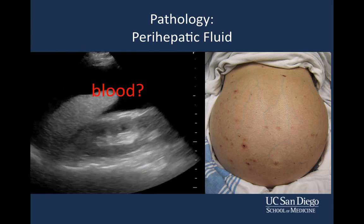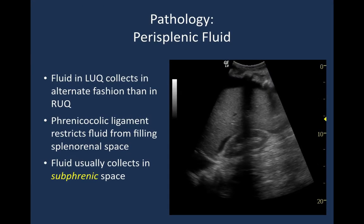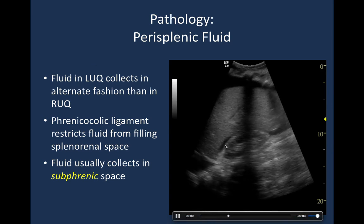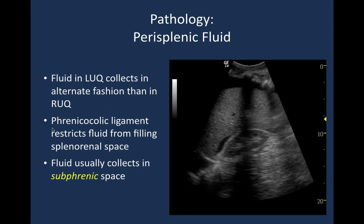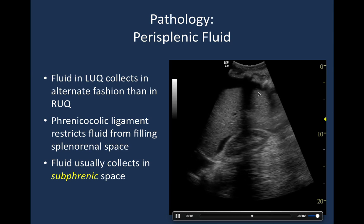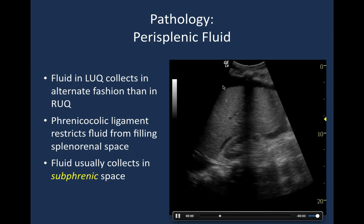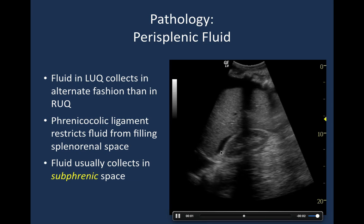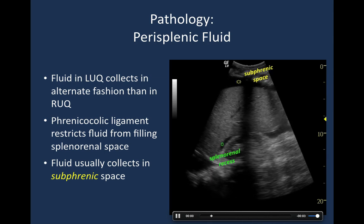Fluid in the left upper quadrant collects differently than in the right. In the right upper quadrant, fluid accumulates between the liver and kidney in Morrison's pouch. However, in the left upper quadrant, an anatomic structure called the phrenicocolic ligament restricts fluid from filling preferentially in the splenorenal space, so fluid often collects in the subphrenic space — between the spleen and the diaphragm. You can see fluid between the spleen and diaphragm, as well as a lesser amount in the splenorenal space. Initially fluid collects subphrenically, and once it fills significantly it dissects into the splenorenal space.